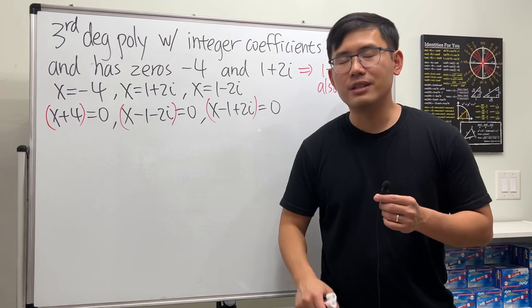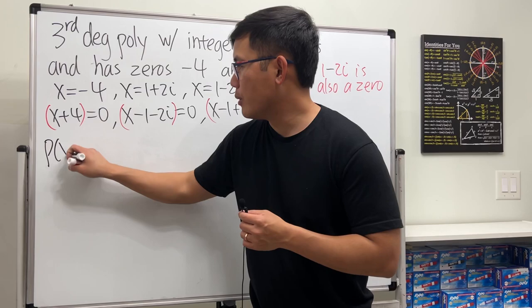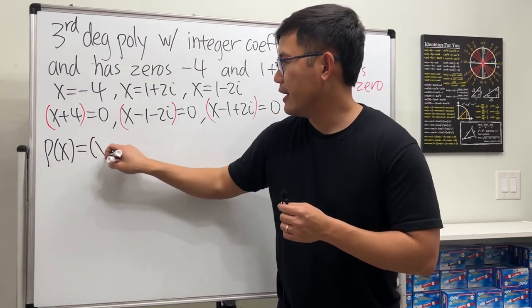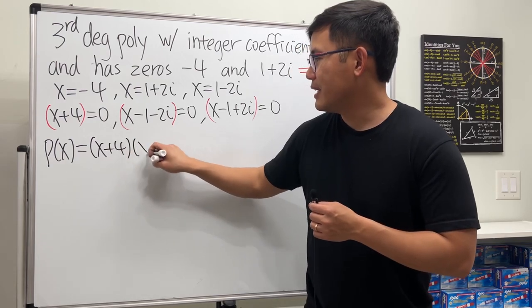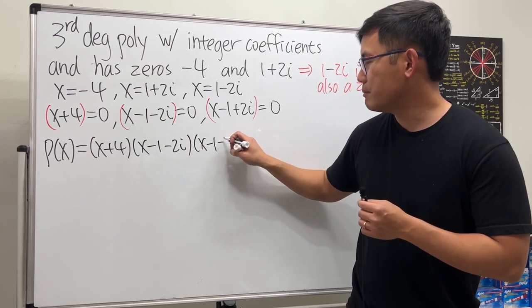We are looking at our polynomial P(x) to be this times that times that. I'll write down (x+4)(x-1-2i)(x-1+2i).